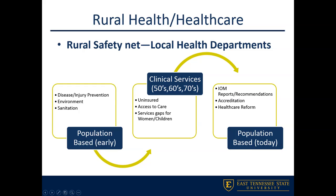Talking about local health departments: think back to the history of public health. Early on, health departments' main focus was more environmental — sanitation issues, disease prevention and disease spreading. That was really population-based in its earliest formation. In the 1950s through 1970s, we didn't really have infrastructure in rural communities, no FQHCs, so rural communities had to rely on local health departments. Because of that, local health departments were almost forced to be more clinically engaged, which really worked to blur the lines between public health and medicine.